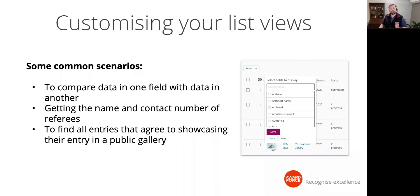Some common scenarios include: comparing data in one field with data in another, getting the name and contact number of referees so program managers can contact them, and finding all entries that have agreed to showcasing their entry in a public gallery. Let's take a look in Award Force to see what options help us work more efficiently.